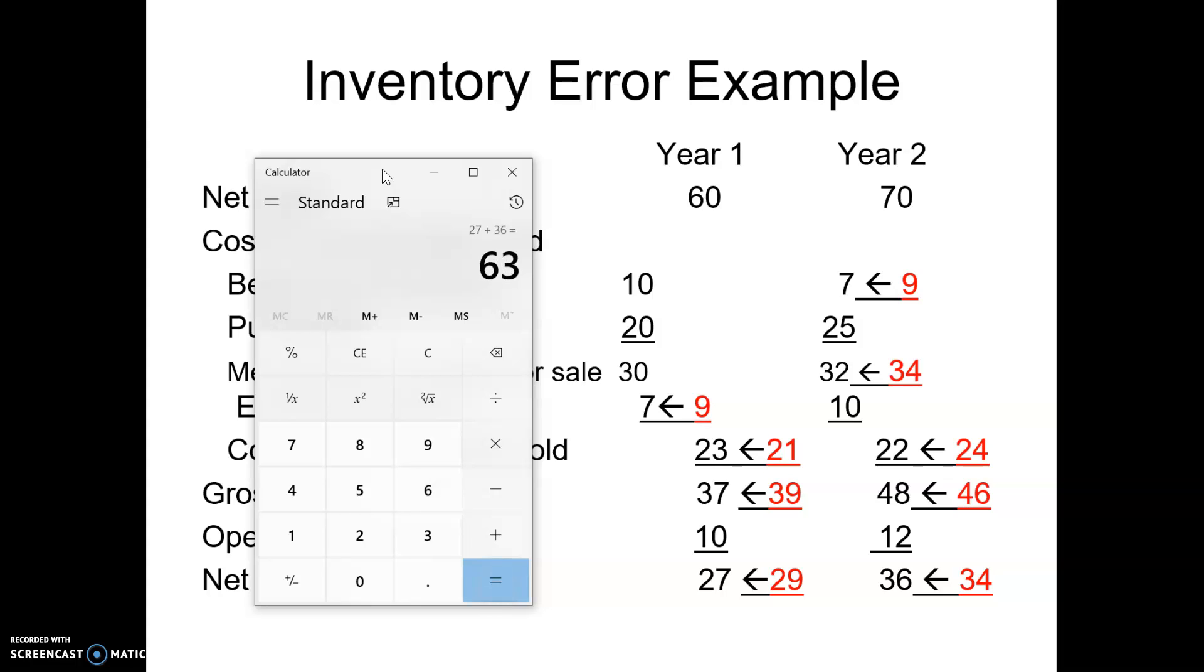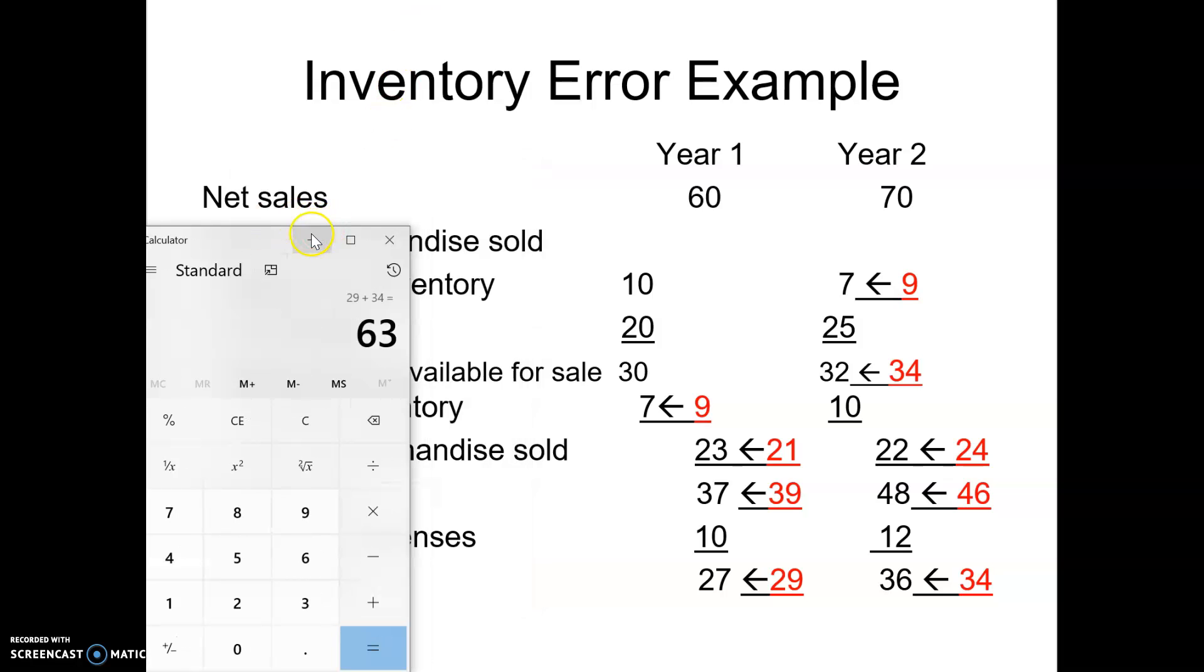We can see the corrections. We should have recorded 29 in Year 1 and 34 in Year 2. So 63 was the correct amount between the two years.